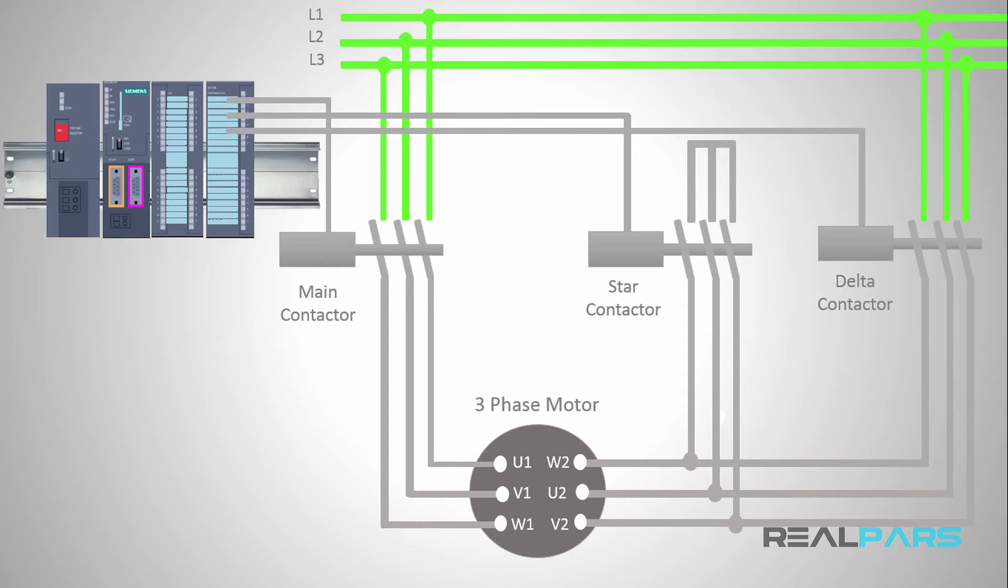To send the motor start command to the PLC I'm going to place a start switch here and connect it to the first input of the digital input module. For the stop command I'll place a normally closed stop switch here and connect it to the next PLC input.